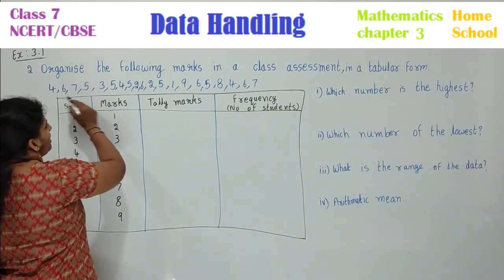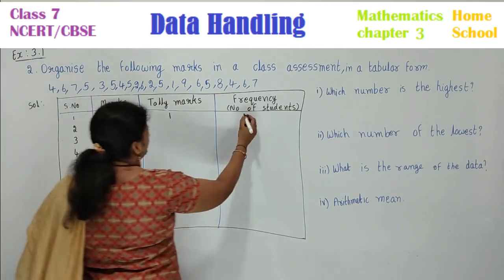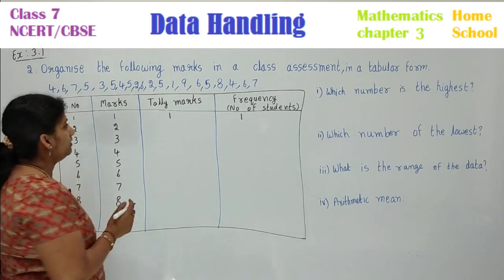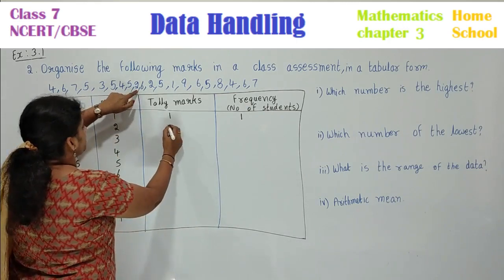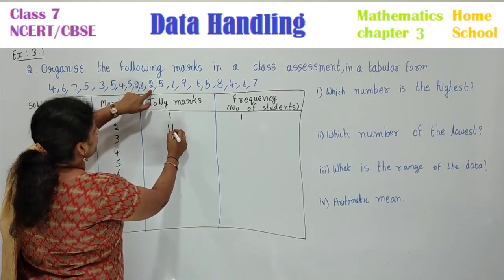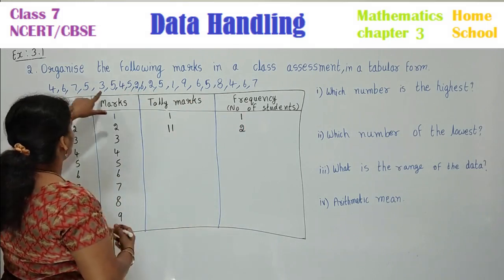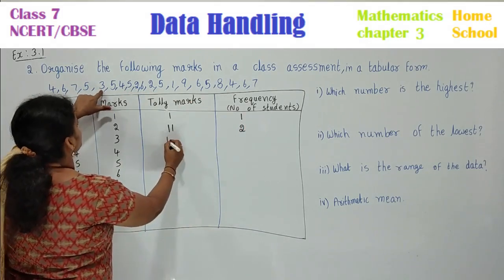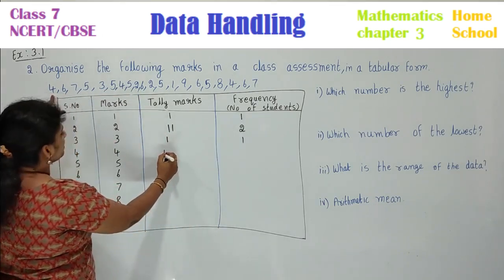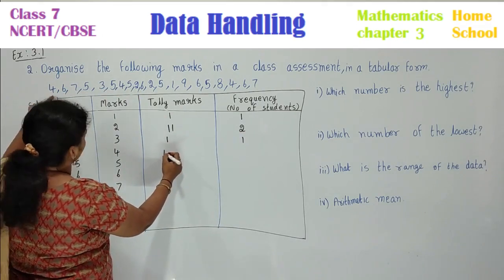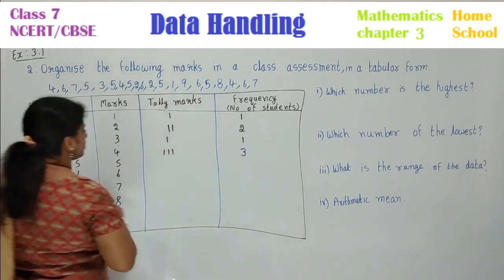1 mark - observe here, only 1 student. So tally, draw 1 vertical line, frequency 1. Then 2 marks - where is 2? When you see 2, put 1 vertical line, and when you see another 2, one more vertical line. Count this tally: 2. Write in frequency. Next, 3 mark: only 1. 4 mark: 1, 2, 3 - total 3 members scored 4 marks.